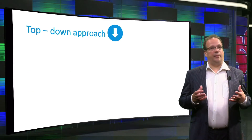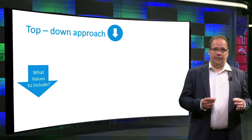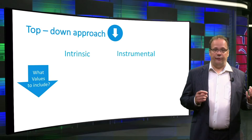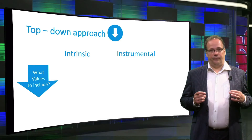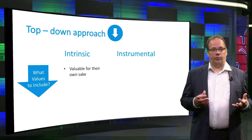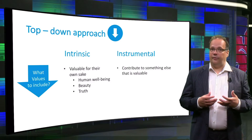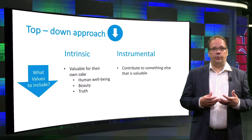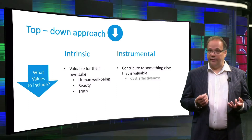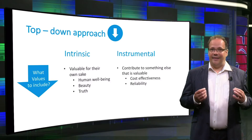Once a list of values has been made, the next question is: what values should be included in the design? To answer these normative questions, we should distinguish between intrinsic versus instrumental values. Intrinsic values are values that are valuable for their own sake. Some typical examples are human well-being, beauty, and truth. Instrumental values are valuable because they contribute to something else that is valuable. Typical examples in design are cost-effectiveness and reliability.